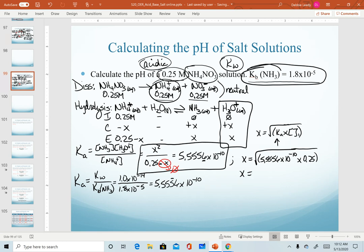Here, x equals the value of 1.1785 times 10 to the minus 5. That's molarity because it's from an ICE table. Helpful to tell yourself what you've just calculated, that this is the hydronium concentration.